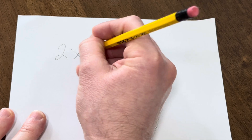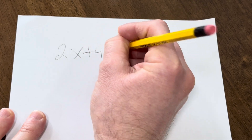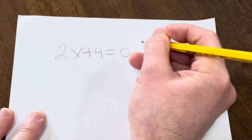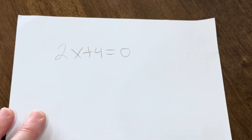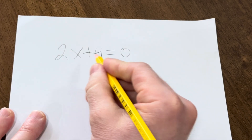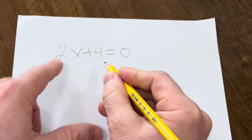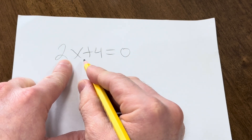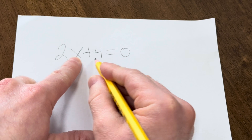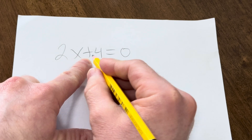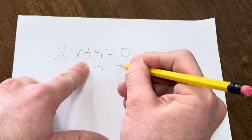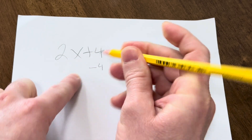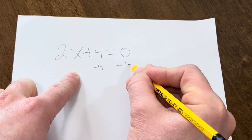So 2x plus 4 equals 0. We're going to try to solve this. First I'm going to show you how to do it. To solve this, the first step is to isolate the x. To do that, we have to first subtract 4 from both sides. Remember, what you do to one side, you do to the other.